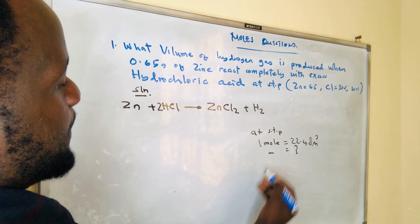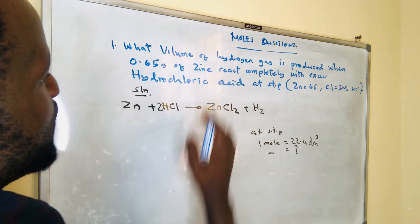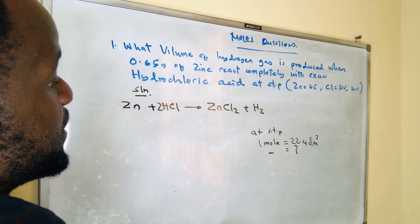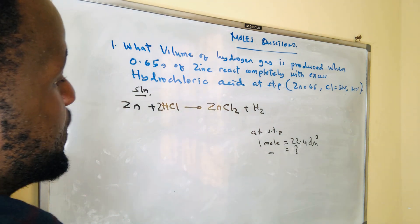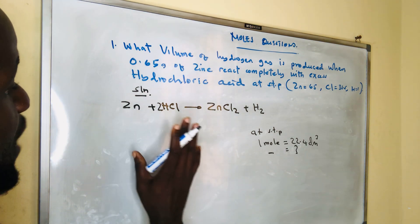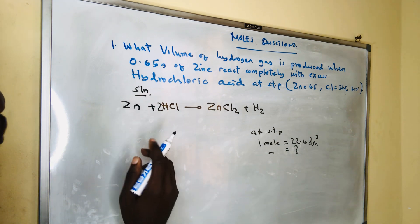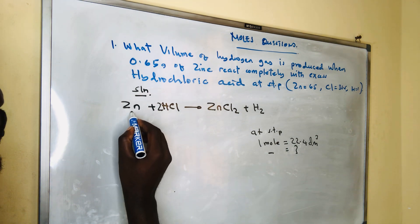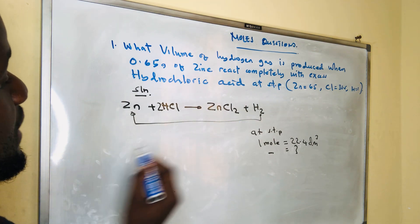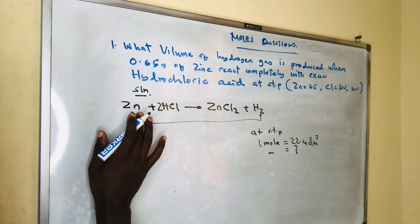To find the volume, make sure you start by finding the moles of hydrogen, then you can use the ratio to get the volume. To get the number of moles of hydrogen, you must use stoichiometric concepts, using the relationship with zinc.